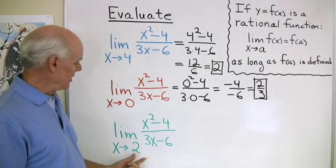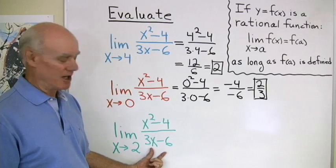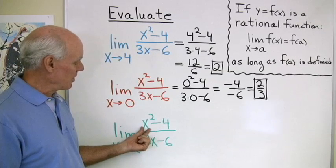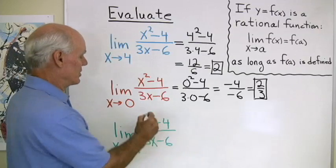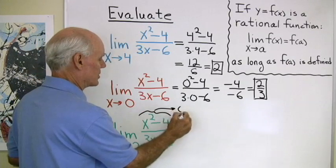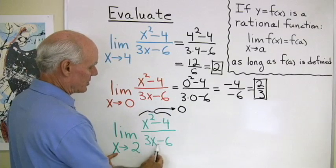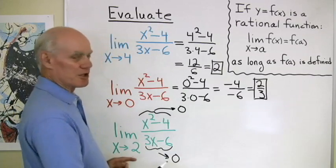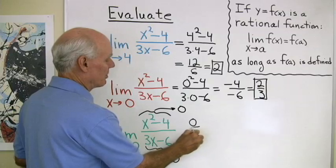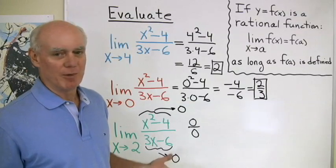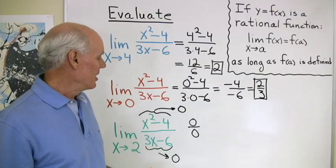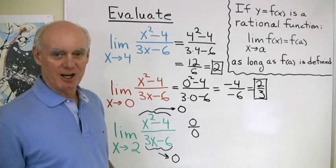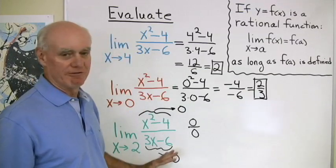Now let's try the same expression as x goes to 2. My problem is that when I substitute x = 2, the numerator gives 2² - 4 = 0, and the denominator gives 3·2 - 6 = 0. So I end up with an expression of the form 0/0. That's called an indeterminate form — I don't know what that is, and I'm going to have to use something else to evaluate this limit.